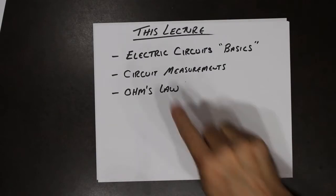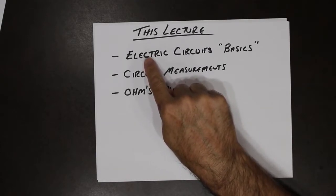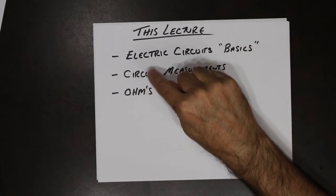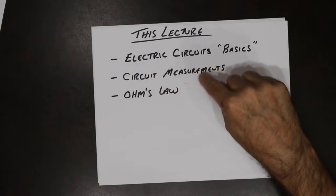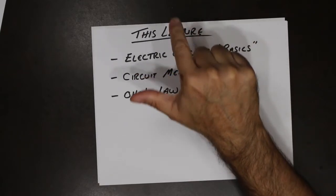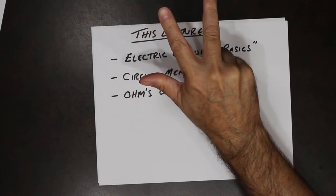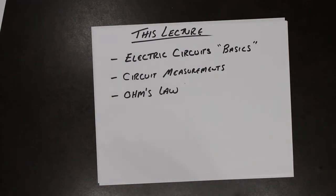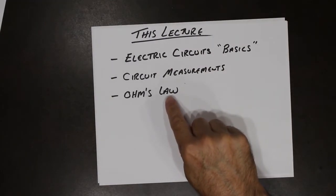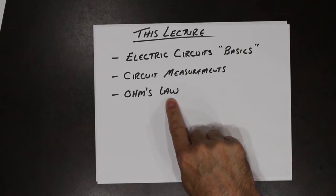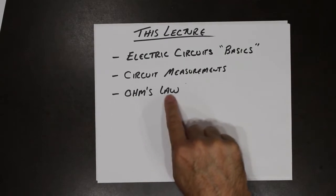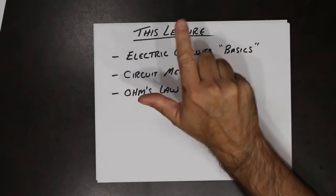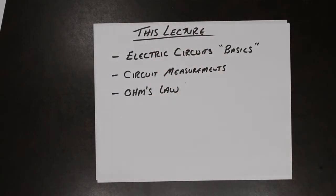In this lecture we're going to cover some simple things like the electric circuit basics. We're going to cover three sets of measurements — measuring voltage, current, and resistance — the three elements we've talked about in the previous class. And then we're going to look at the most important thing you will probably ever learn in your electronic study, which is Ohm's law, the mathematical relationship between voltage, current, and resistance. So let's get started.